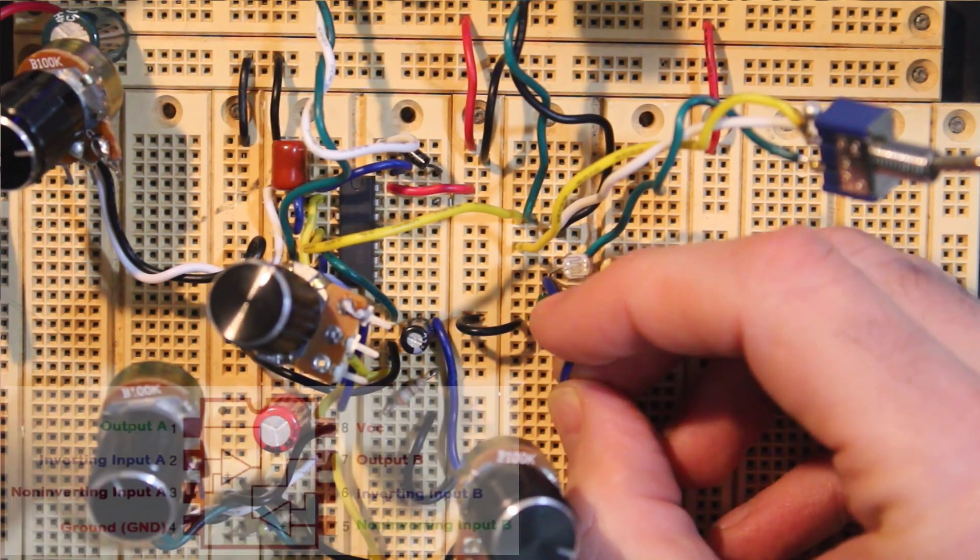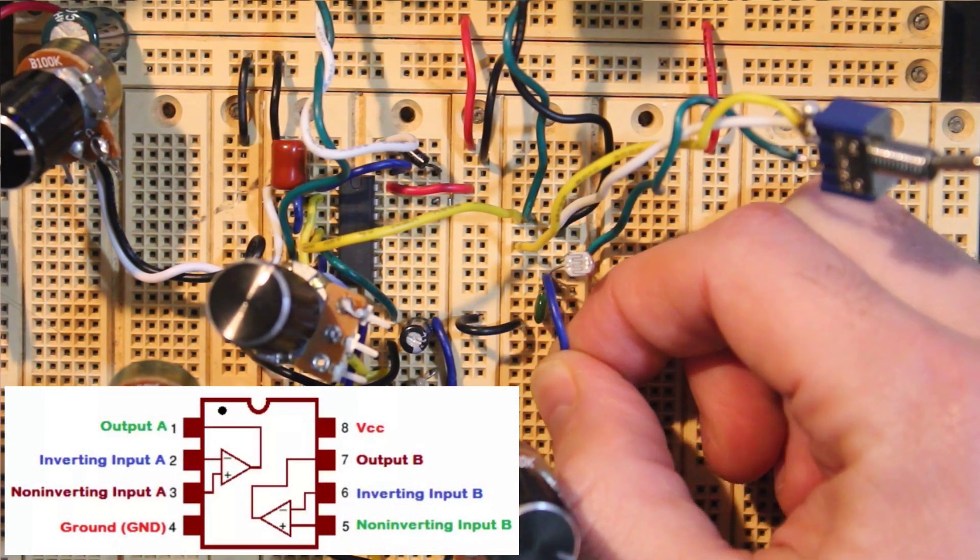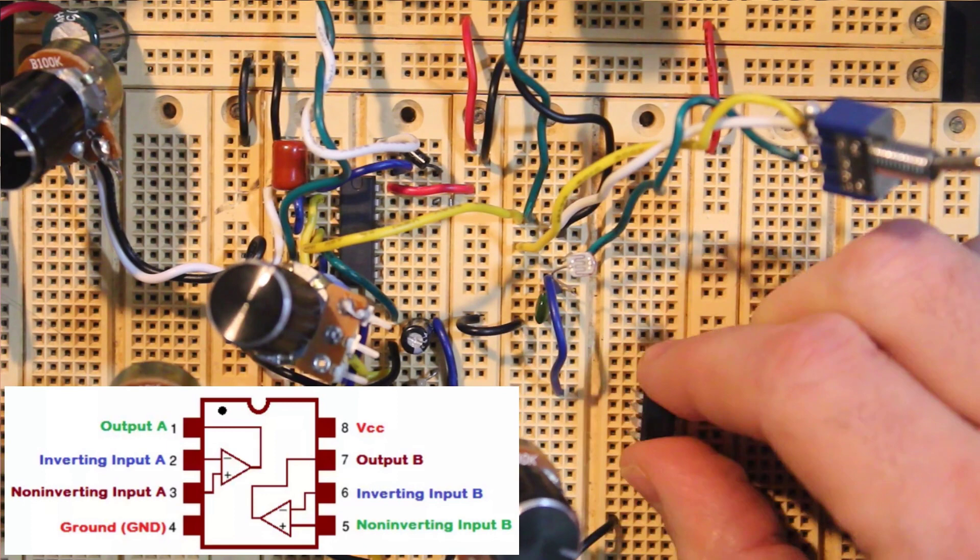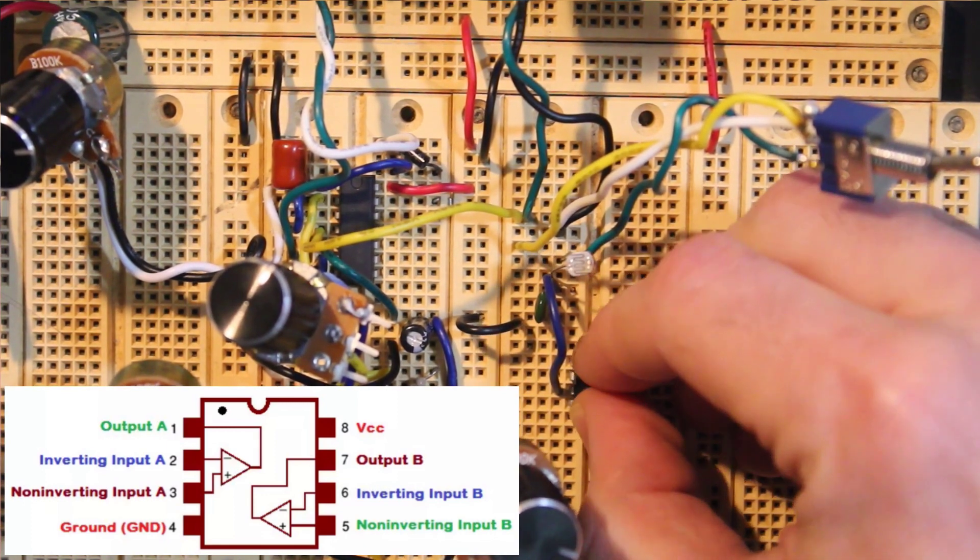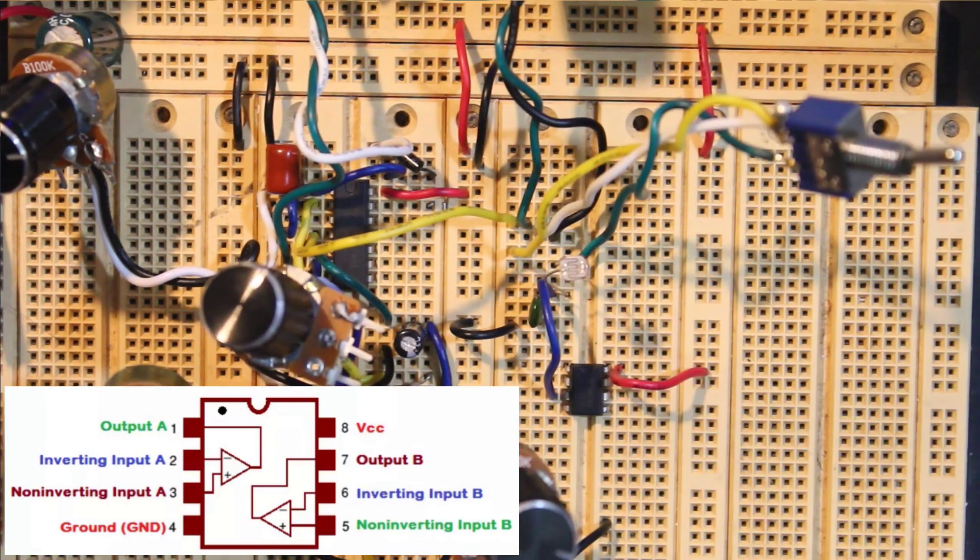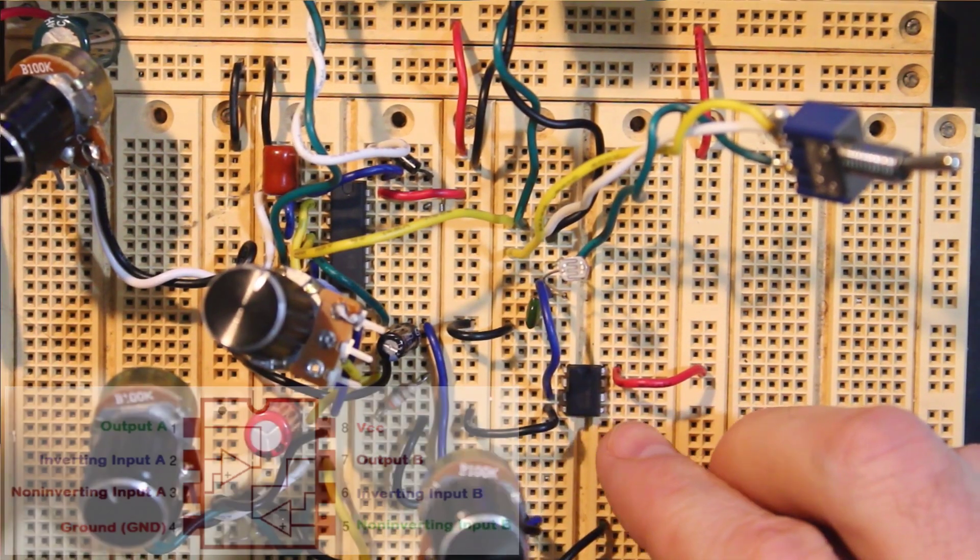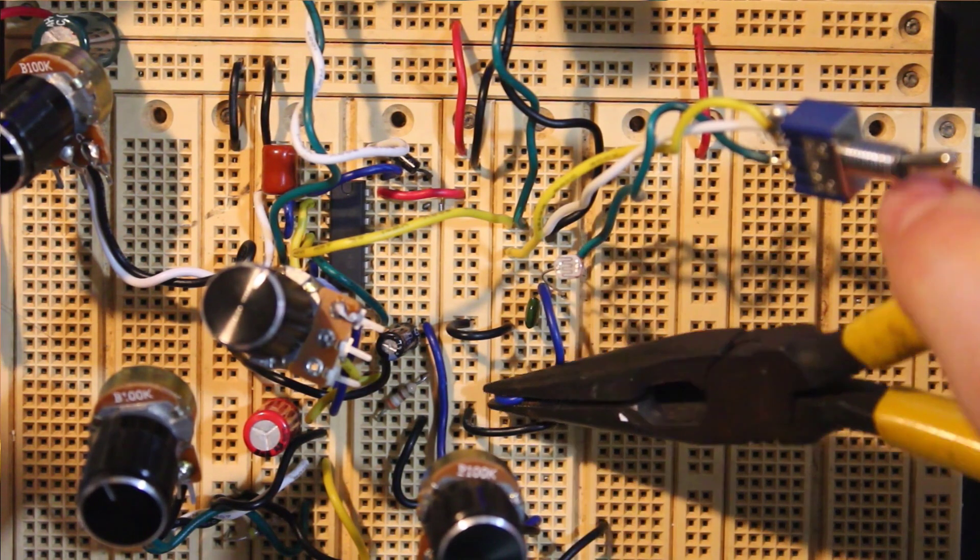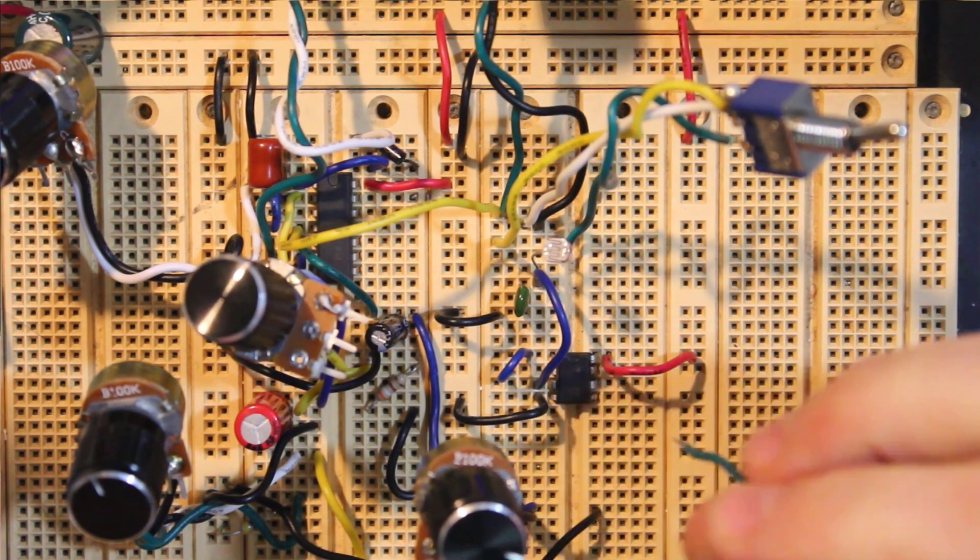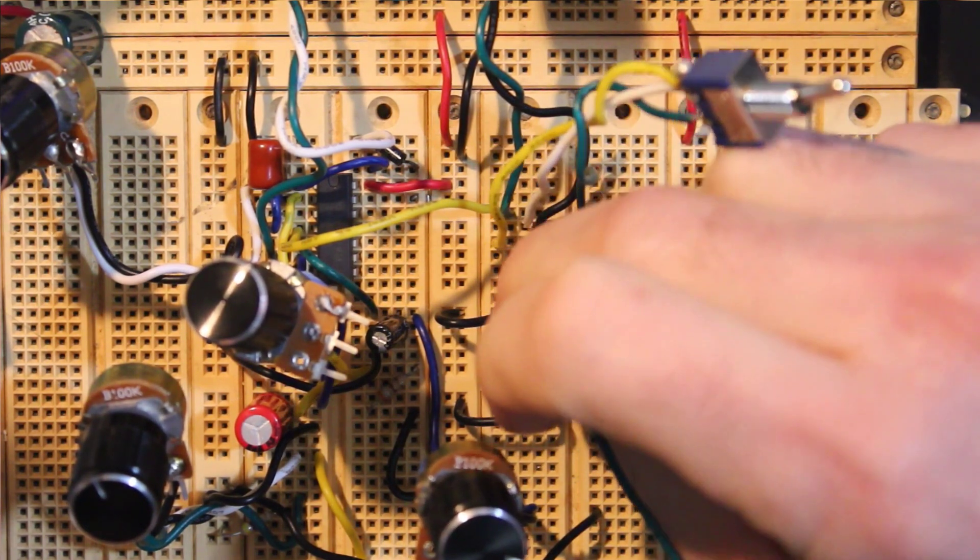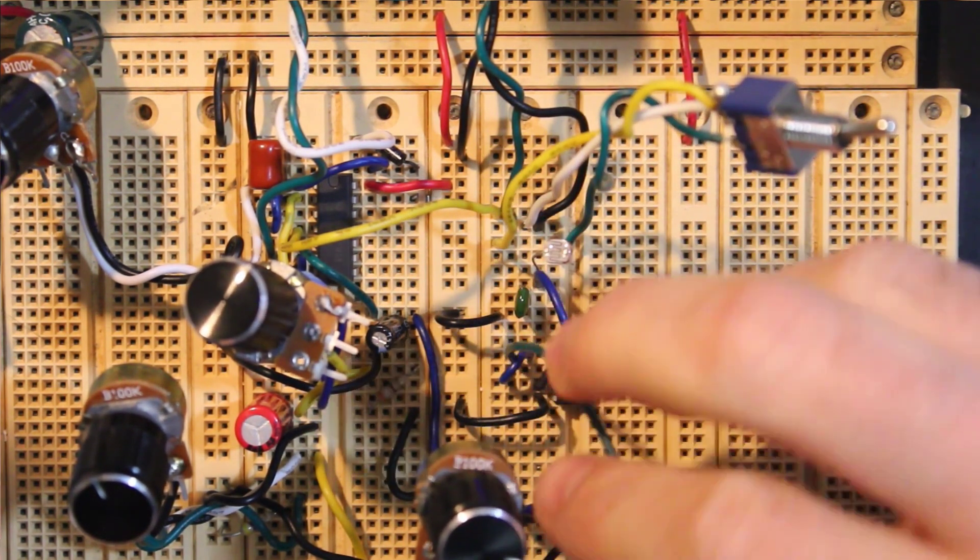Next we'll jump the junction of the LDR and capacitor down to the non-inverting input of our op-amp. We also need to ground the op-amp and supply it with power. Add a small jumper from the inverting input to the output of the op-amp. This is the basic setup for a buffer or voltage follower.